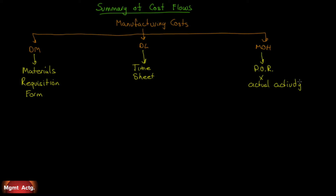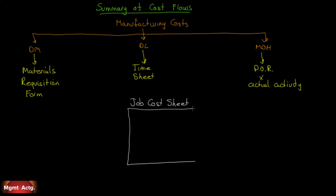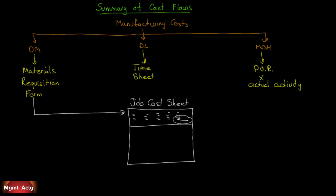Once we have those three costs, we can allocate them on something called a job cost sheet. When I say sheet, I don't mean a piece of paper — I mean the screen on the enterprise resource planning system or the internal accounting system. Direct materials would show up here; the top part might be materials. The layout will be different for each company — I'm just giving you a general example. We have a total for all the materials used.